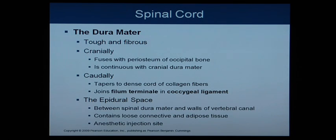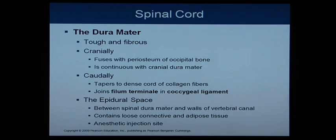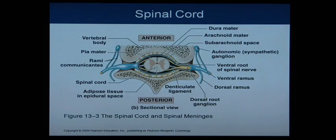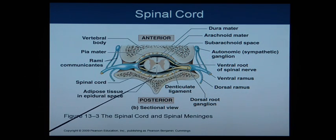The dura mater is very tough and fuses with the periosteum of the occipital bone of the skull, continuous with the cranial dura mater. Caudally — at the tailbone — it tapers into a dense cord of collagen fibers and joins the filum terminale, which attaches to the coccygeal ligament. The epidural space is between the dura mater and the walls of the vertebral canal, containing loose connective and adipose tissue. This is where anesthesia can be injected.